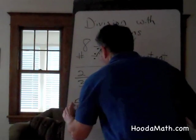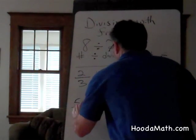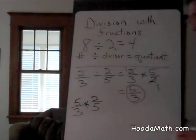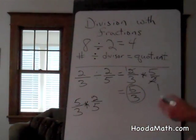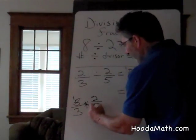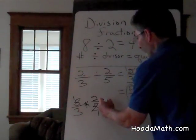5 thirds times 2 fifths. We can simplify by dividing 5 into 5 goes once, 5 into 5 goes once. We multiply,